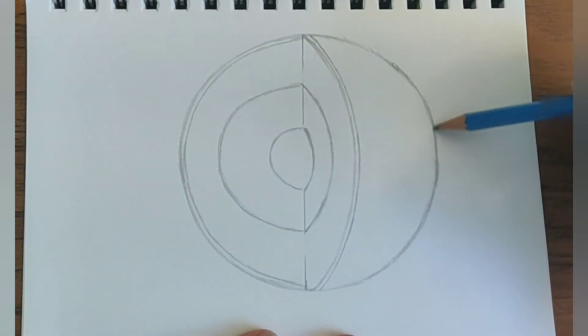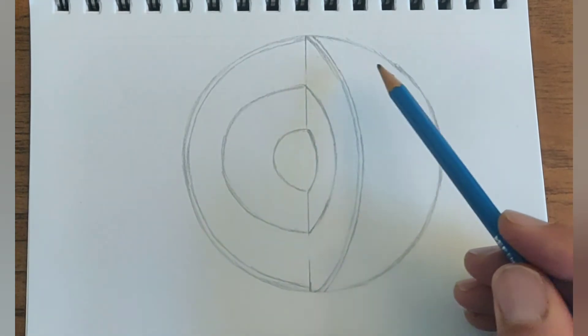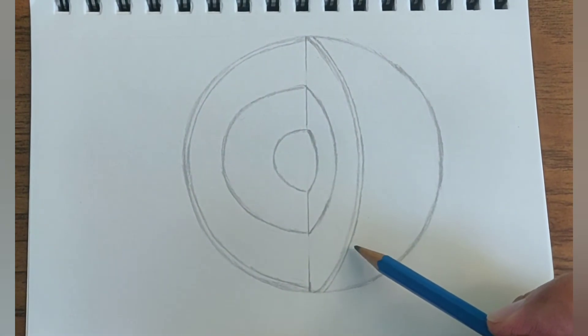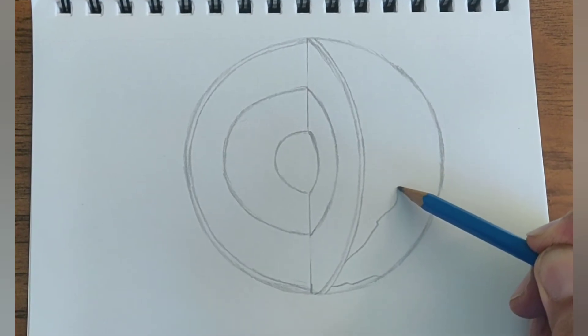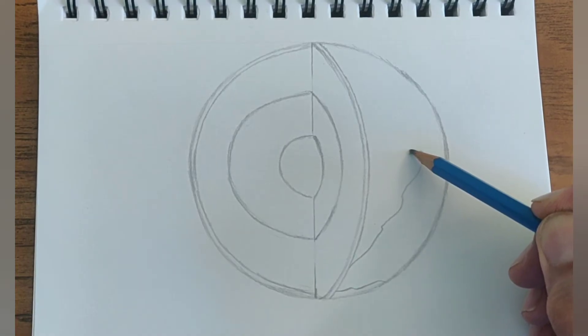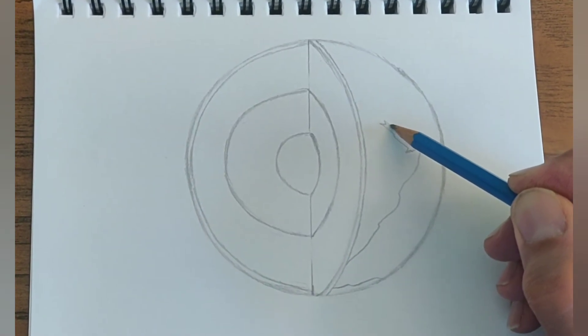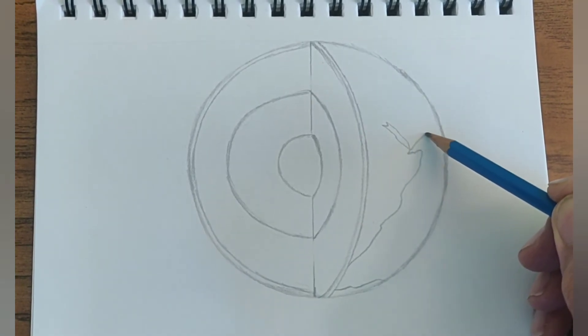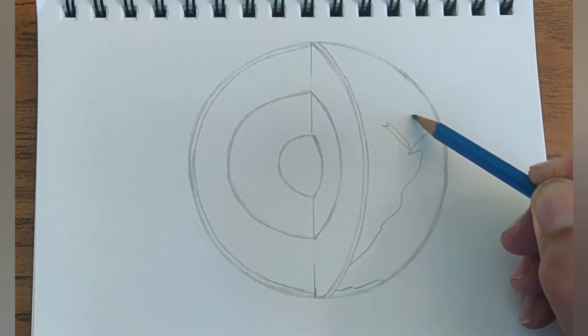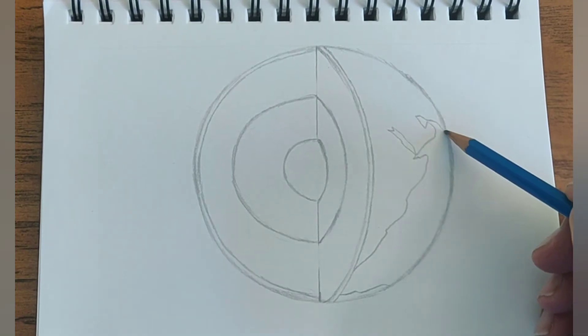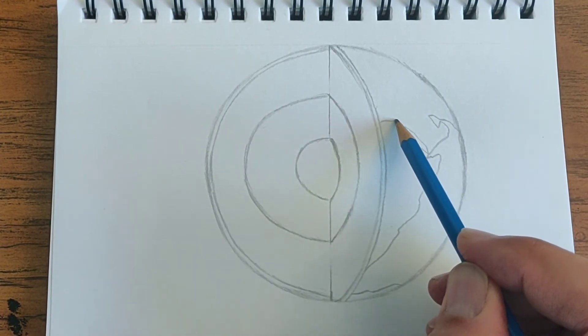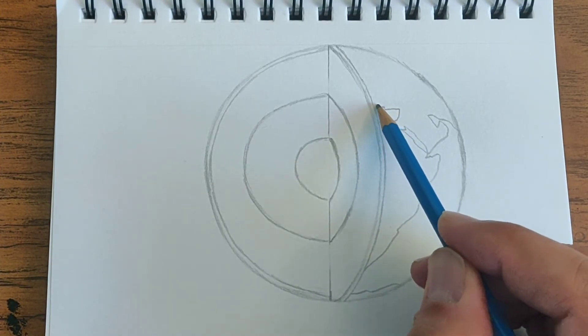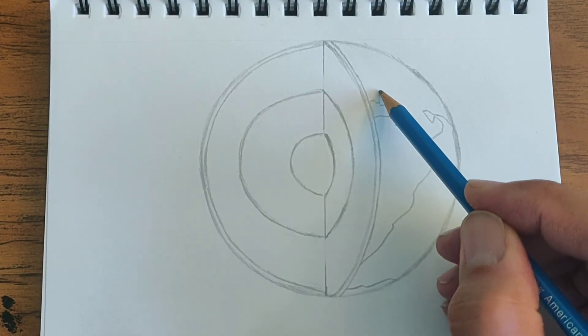And then I'm going to add some of the continents here. Just so when we color it, we can see that this is supposed to be like the earth, the outside of the earth as we all see it from outer space. I think it's like the Mediterranean. And when I color it, then you'll see which part is the land and which part is the water. I'll probably just use green and blue.